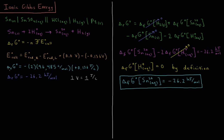So our ΔG° of reaction equals −2 times Faraday's constant (96,485 coulombs per mole) times the standard EMF of +0.136 volts (one joule per coulomb), giving a standard Gibbs energy of reaction of −26.2 kilojoules per mole.